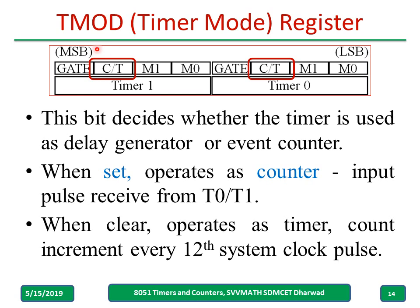There is another bit called C/T bar. This bit decides whether the timer is used as a delay generator or an event counter. When it is set to 1, it operates as a counter and input pulses are received from external pins T0 or T1. When it is 0, it operates as a timer and the count is incremented every 12th system clock pulse.